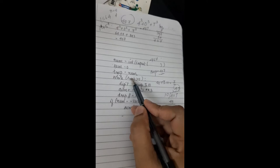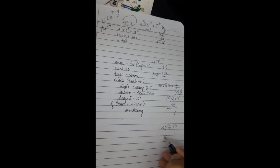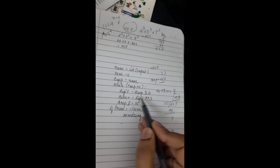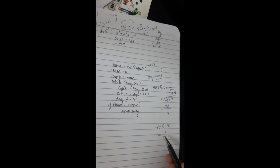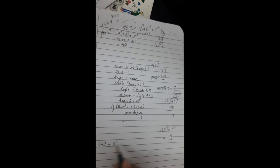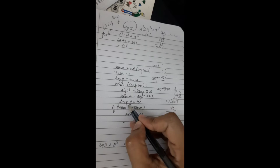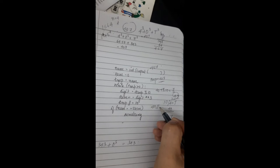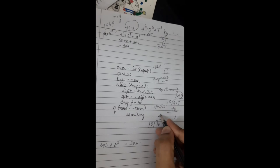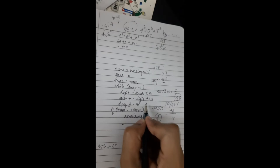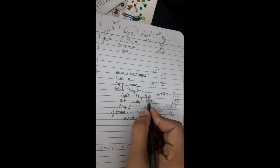Now temp is 40, which is greater than zero, so the loop continues. It will do 40 modulo 10, and the answer is zero. So zero raised to three gets added to sum. Sum was containing 343, and zero raised to three is zero, so sum remains 343. Then again temp is updated: 40 floor-divided by 10 gives four, so your new temp value becomes four.